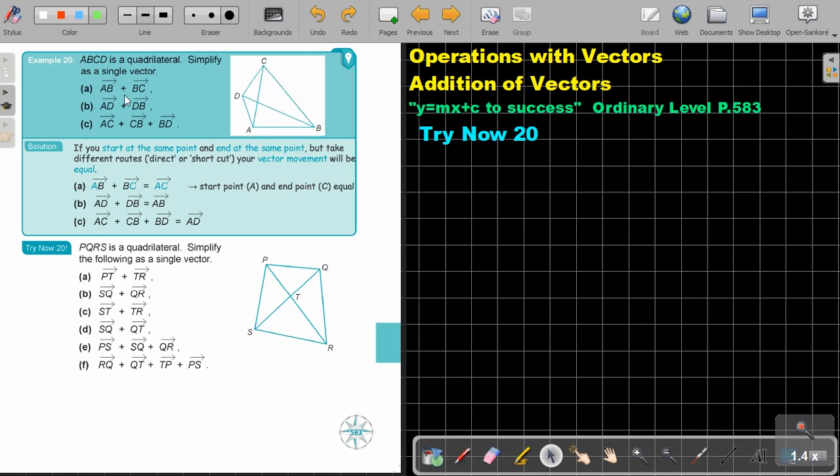Let me show you here on the sketch. It's AB plus BC. Can you see the result? It's from the start to the end, so it will be equal to AC. Just take note, to test it, it's the first A and the last alphabet letter.